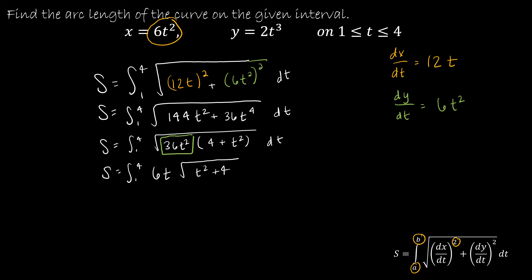So now what I'm going to do is a u substitution. I'm going to let u be the radicand, which is t² + 4, and du then be the derivative of u, which is 2t dt. Don't forget your dt.